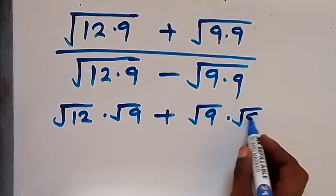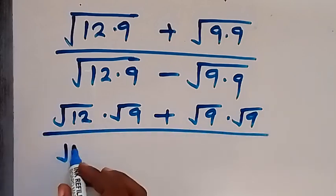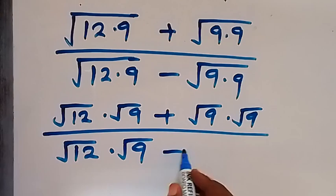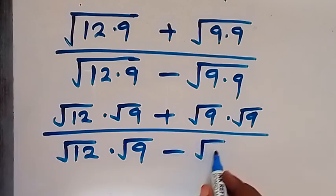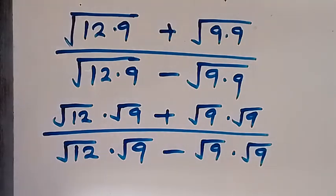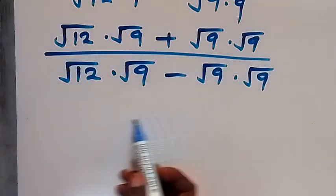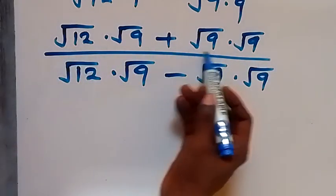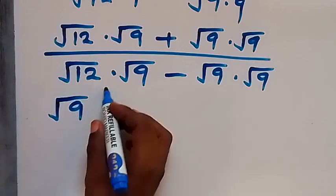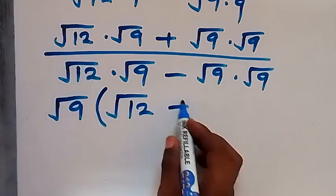Square root of 9, all divided by square root of 12 times square root of 9, then minus root 9 times root 9. We have root 9 common in the numerator and the same in the denominator, so let's factor root 9 out: we have root 9 into bracket — what is left here is root 12 then plus root 9.